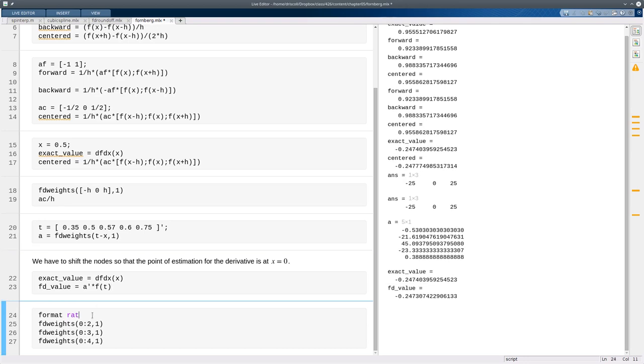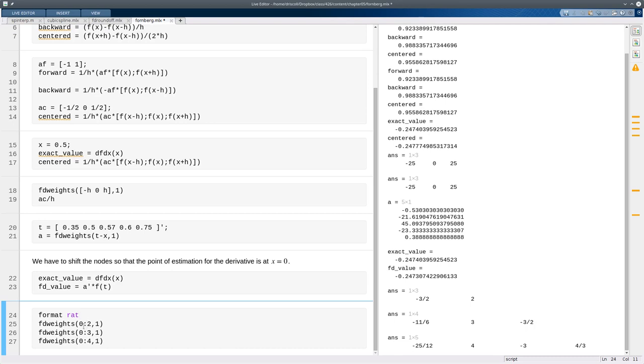And finally, just as a little bit of a fun aside, if we use format rat in MATLAB, it expresses answers as rational numbers. So that means we can get the weights that appear in finite difference tables any time we want, just by setting the node spacing h equal to one. So here are one-sided difference formulas, forward difference formulas on 3, 4, and 5 nodes. These are the same that appear in the table in the book.